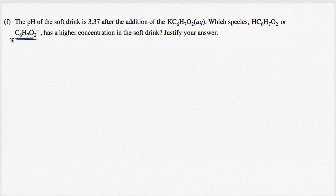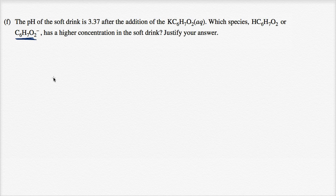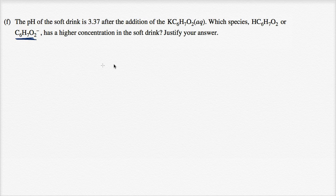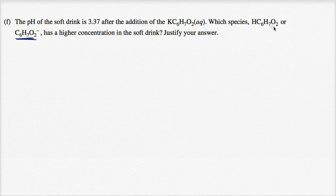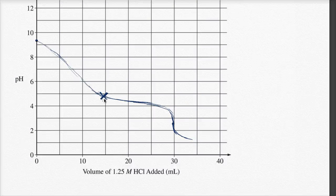And so if we're thinking about titrating potassium sorbate, which we've been doing in the last several parts of the problem, at what point do you have an equal concentration of potassium sorbate and sorbic acid? We have equal concentrations at the half-equivalence point.